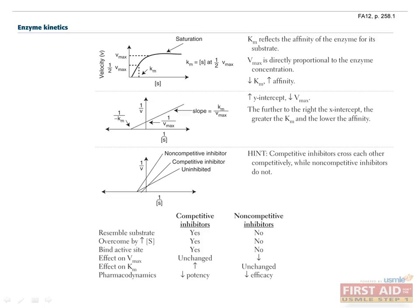Competitive inhibitors have the following characteristics. They typically resemble the substrate and bind to the active site of the enzyme. Because they bind the active site, their effect can be overcome by increasing the substrate concentration and diluting the inhibitor out. Competitive inhibitors increase Km such that the x-intercept is shifted to the right, which means they decrease potency and affinity. On the other hand, competitive inhibitors do not alter Vmax, hence the y-intercept is unchanged.